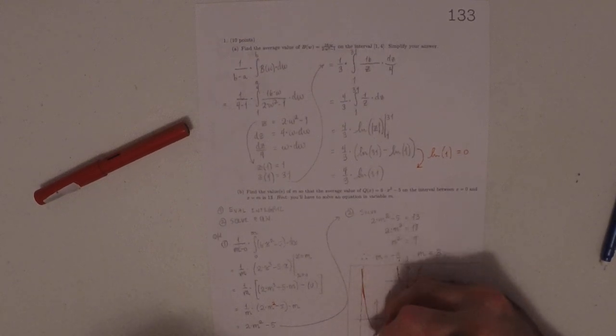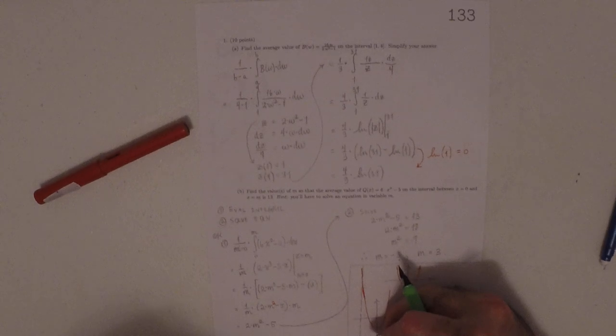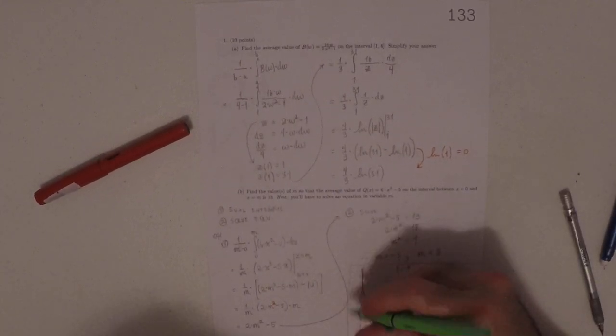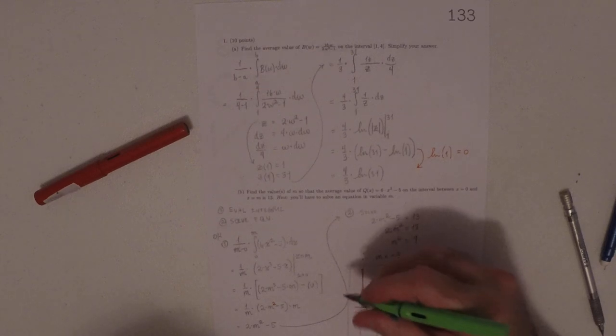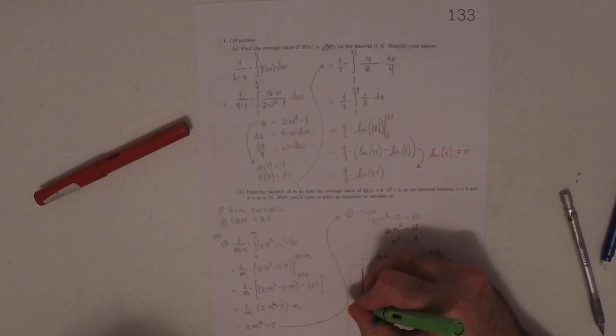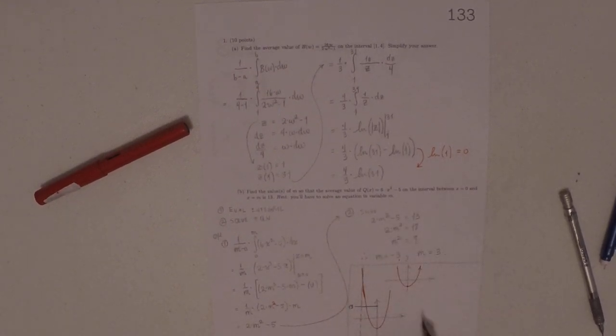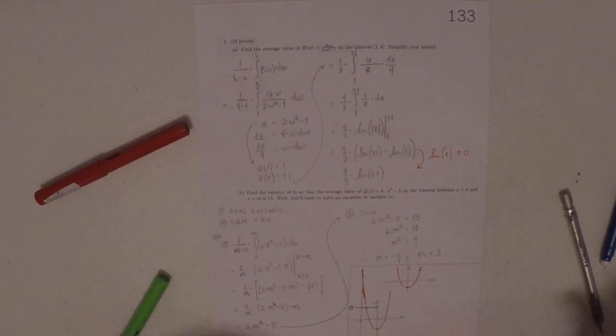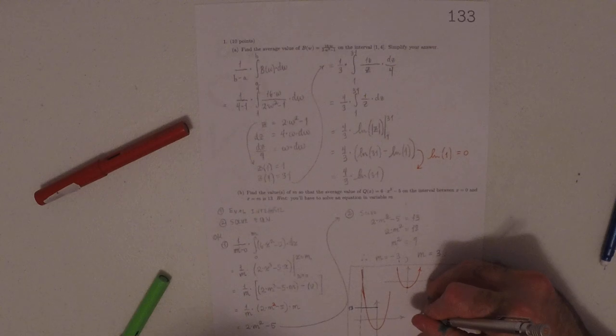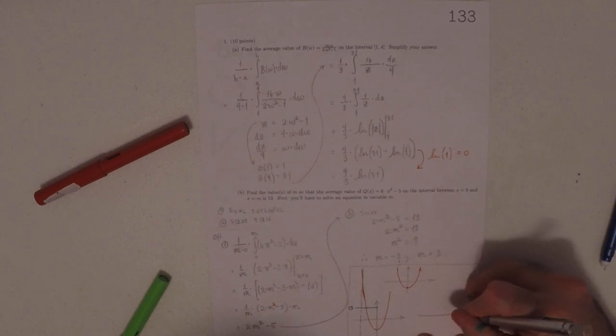But what the drawing is saying is that the average value of this function from negative 3 to 0 would have height 13, if I could just draw it properly. But because the picture is symmetric, you'll also see the same result at positive 3.